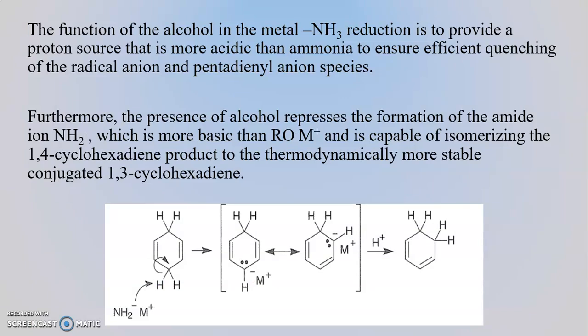The function of the alcohol in the metal-ammonia reduction is to provide a proton source that is more acidic than ammonia, to ensure efficient quenching of the radical anion and pentadienyl anion species. Furthermore, the presence of alcohol prevents the formation of the amide ion (NH2 minus), which is more basic than the alkoxide ion and is potentially capable of isomerizing the 1,4-cyclohexadiene product into the thermodynamically more stable conjugated 1,3-cyclohexadiene. So the presence of alcohol prevents this possibility.